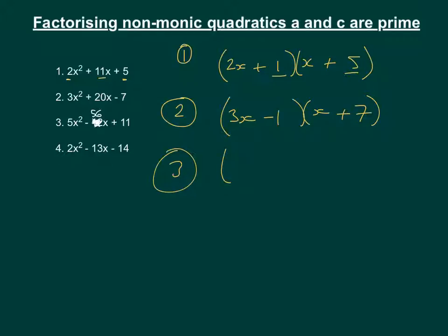So we've got 5x, so we're going to have 5x and x. And then the two numbers are going to be 1 and 11. And we know that they're both going to be negative, because this is positive and this is negative. So two negatives added together would give us a negative, and when they multiply, it would give us positive.